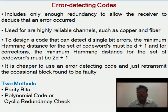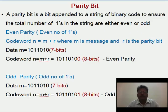There are two methods: Parity Bits and Cyclic Redundancy Check. A Parity Bit is a bit appended to a string of binary code to ensure the total number of ones in the string are either even or odd.